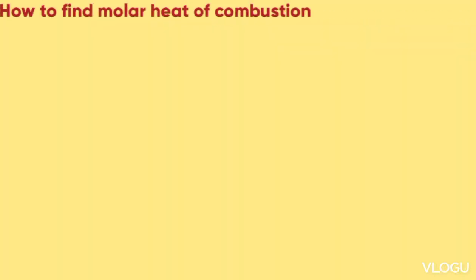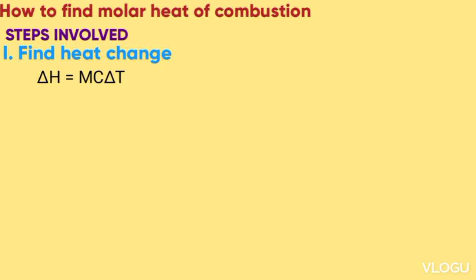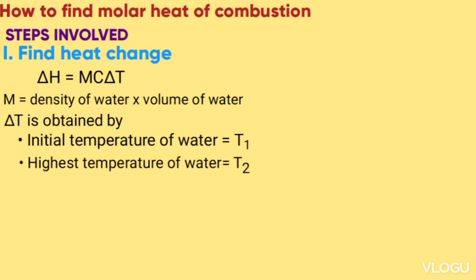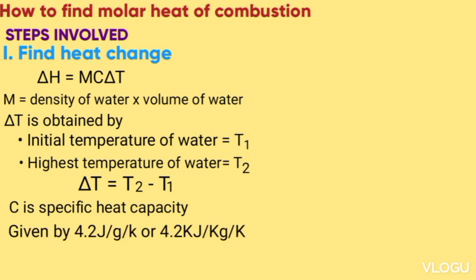How to find Molar Heat of Combustion. In previous lessons, we said the Molar Heat of Solution, displacement, neutralization always follow three steps. Step one is to calculate the heat change which is given by mass of solution times specific heat capacity times temperature change. Mass of solution is obtained by volume of water times density of water. Change in T is measured by initial temperature of water T1 and highest temperature of the water T2, so change in T becomes T2 minus T1. C is the specific heat capacity given by 4.2 joules per gram per kelvin or 4.2 kilojoules per kilogram per kelvin.